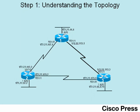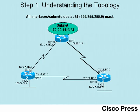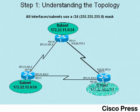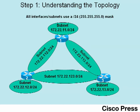Consider the six subnets shown in this figure, each using a mask of 255.255.255.0. The LAN subnets will be 172.22.11, .12, and .13. The three serial links will have subnets 172.22.112, .113, and .123. Once RIP is configured and working on all three routers, each router will have routes to reach all six of these subnets.